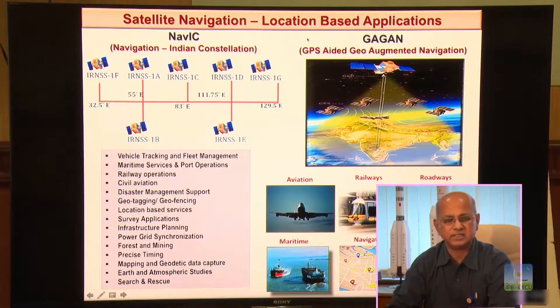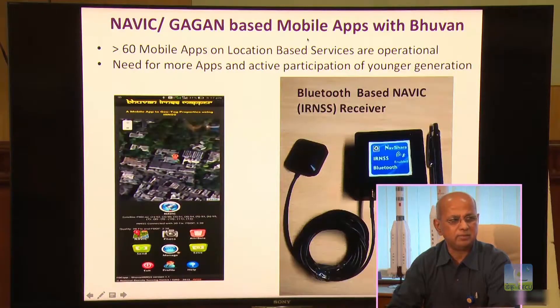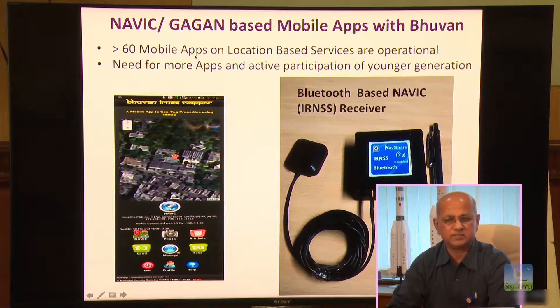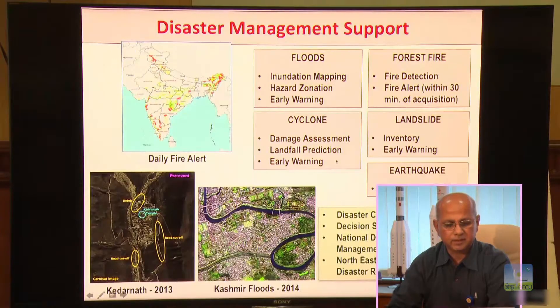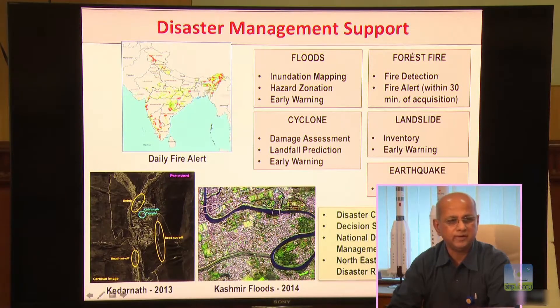There are many applications available on mobile which talk to NavIC through a simple first-generation device that connects to the mobile device through Bluetooth. It is possible for you to use the indigenous GPS system, and a large number of applications are already built on this. I would like to specifically highlight some of the applications on disaster management, particularly on floods, forest fires, cyclones, landslides, and earthquakes, because these are the applications which are important to be highlighted.